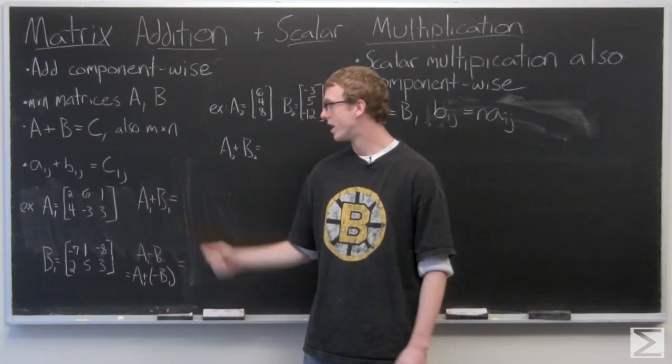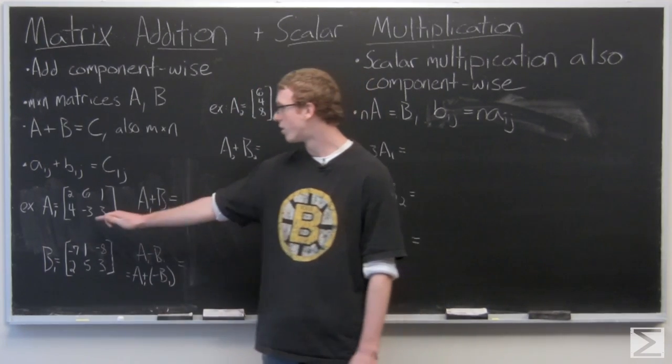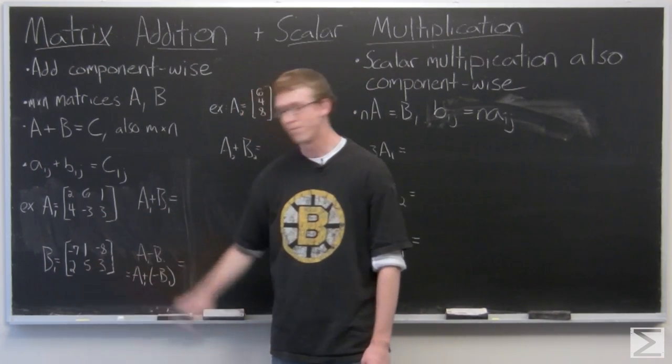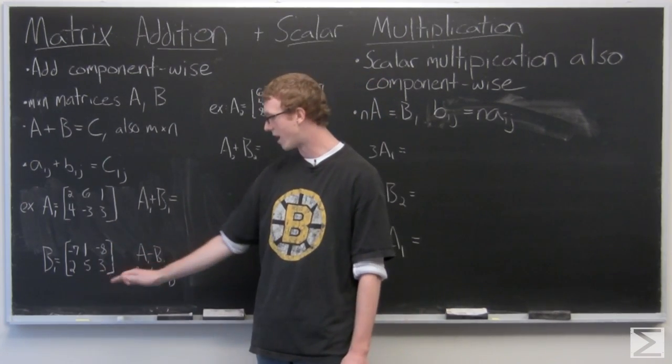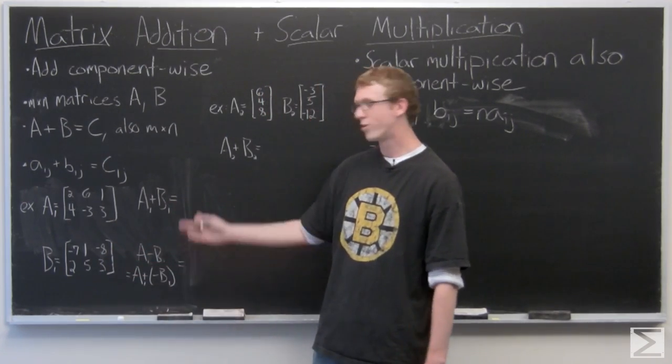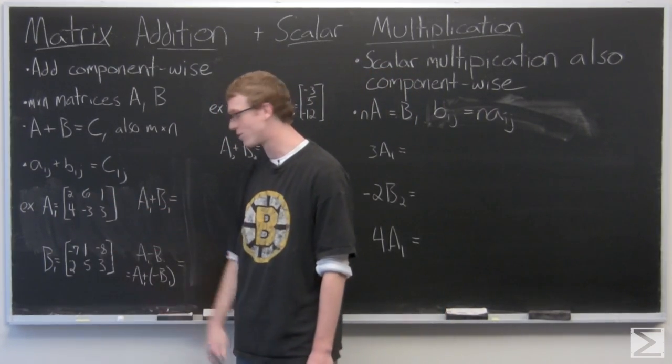So we're going to take a look at just some basic examples here. We have matrix A1: 2, 6, 1, 4, negative 3, 3. Matrix B: negative 7, 1, negative 8, 2, 5, 3. A1 plus B1, we're just going to add component-wise. So you have 2 plus negative 7, 6 plus 1, et cetera.